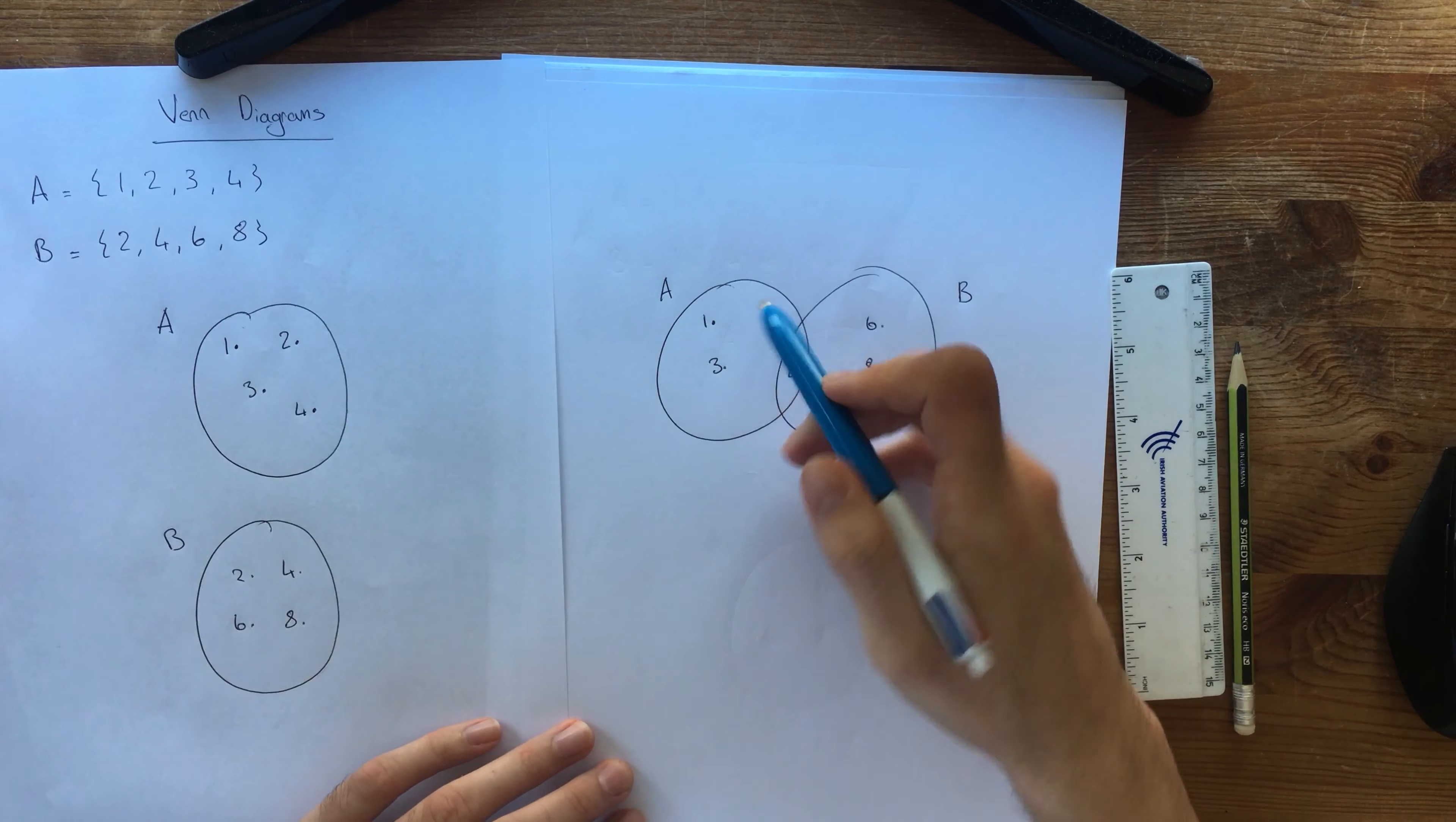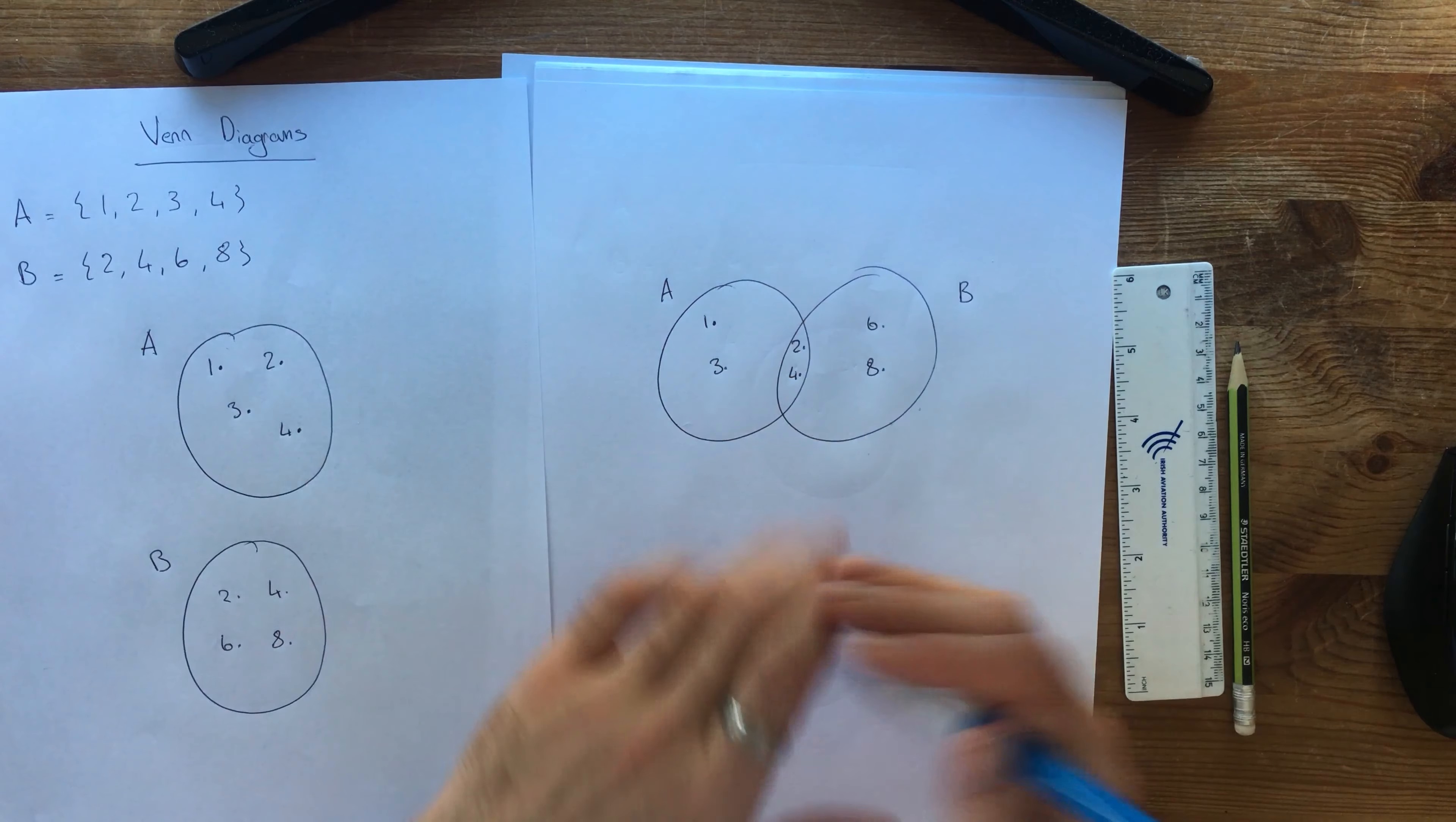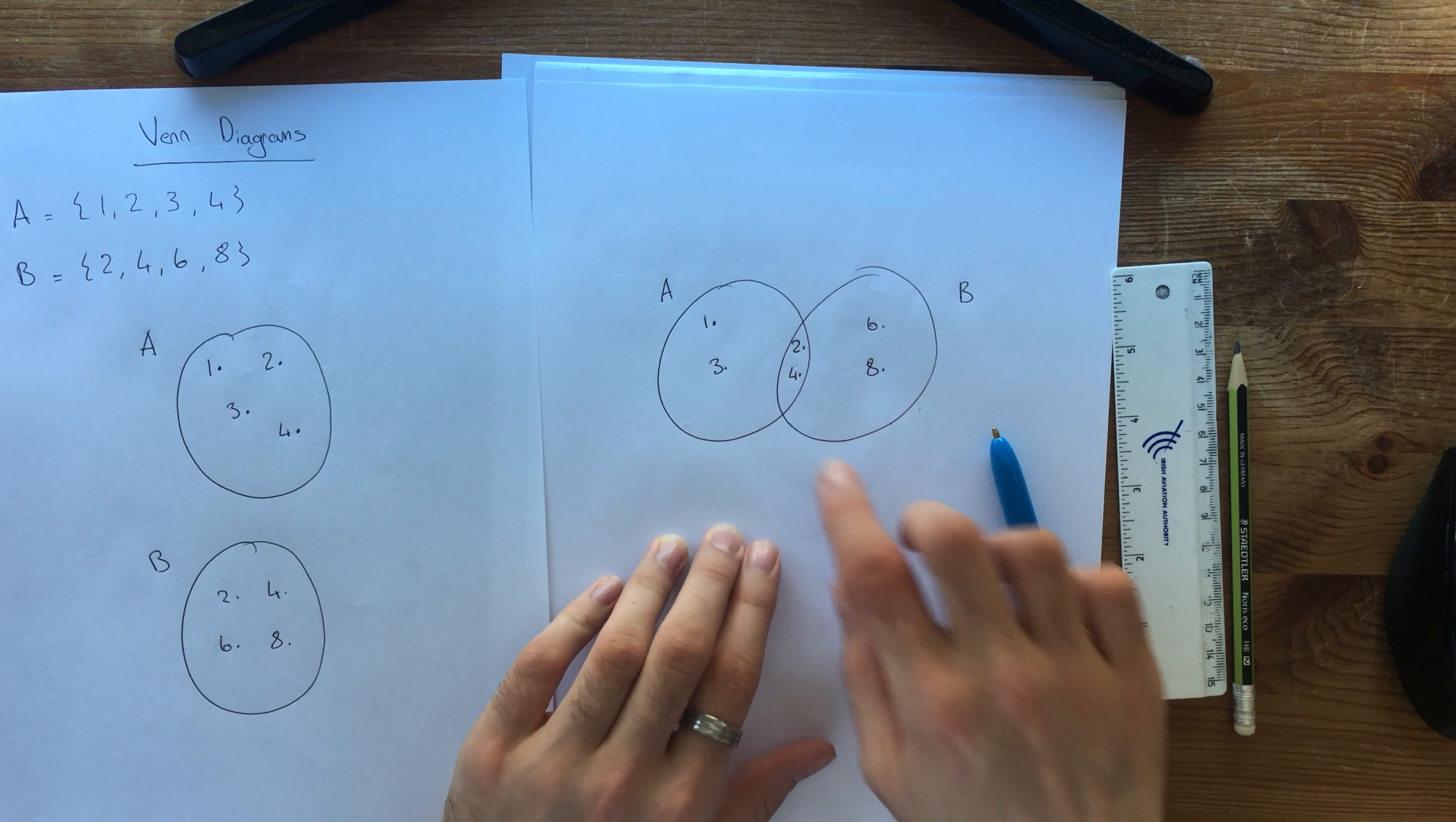So what this means is in A altogether if we put our hand over this we've got 1, 2, 3, 4 which is the same as what we started with 1, 2, 3, 4. If I put my hand over A and we have only B we've got 2, 4, 6, 8. But this little gap in the middle is what's in both of them.